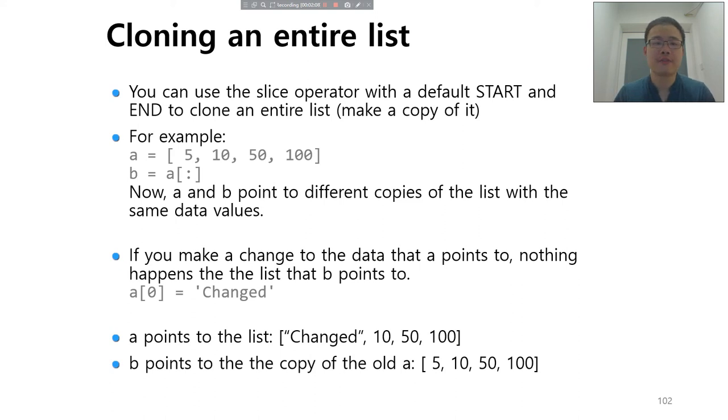Instead of making B equals A, you can write B equals A from the beginning to the end. Remember that if this is blank to 2, then we know it is from the beginning to the second index.